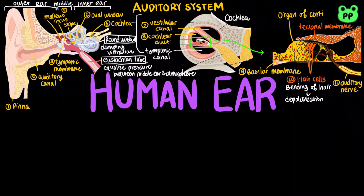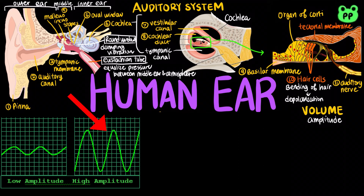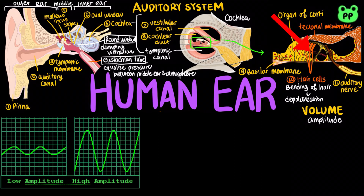The ear can also capture two important sound variables: volume and pitch. Volume, or loudness, is determined by the amplitude of the sound wave. A wave with larger amplitude causes more vigorous vibration of the basilar membrane, causing greater bending of the hair cells, which sends more action potentials in the auditory nerve.